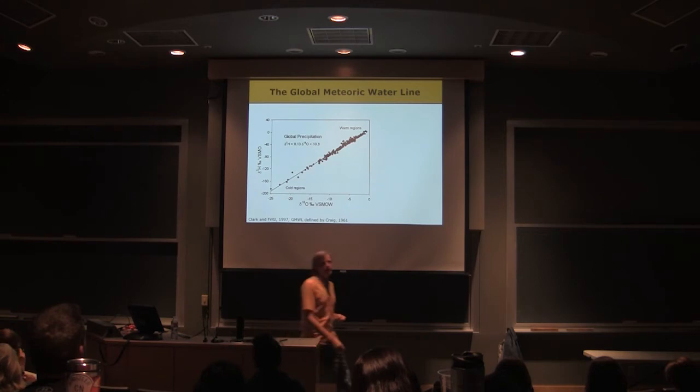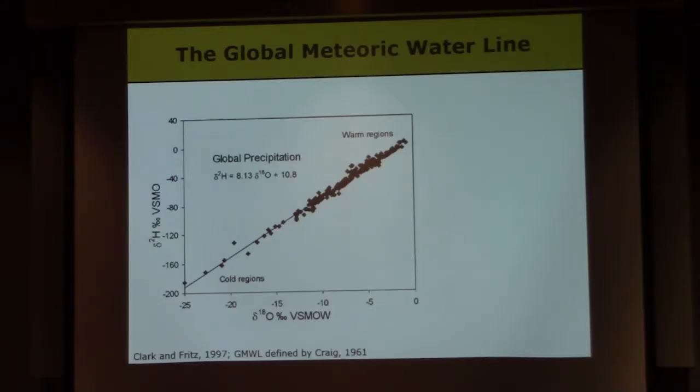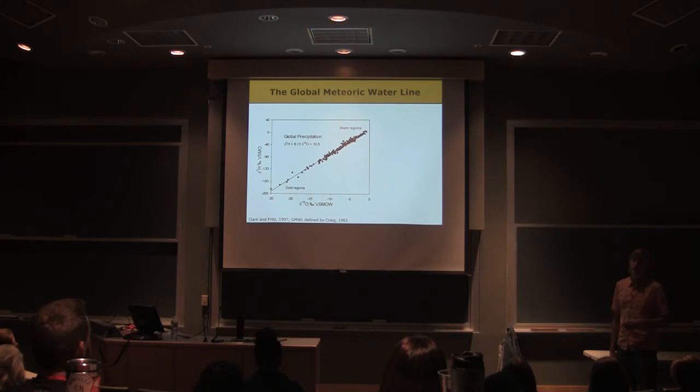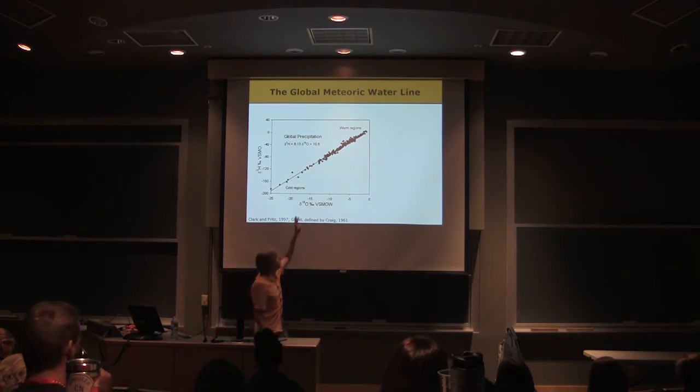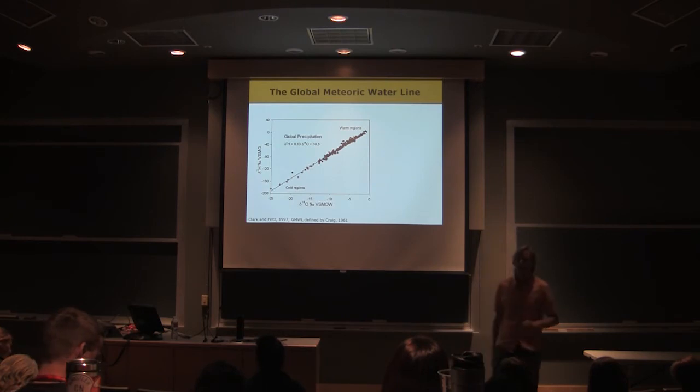So the global meteoric water line, you can plot it up many different ways. This is one example from a couple decades ago. A bunch of precipitation samples, if you plot them all up, wherever you go and collect them, you're going to find a slope somewhere near eight. Now you can go to a particular place, a particular environment and get a slightly different slope, but in general, if you take a bunch of places and you plot them up, you're going to get a slope that's pretty close to eight.